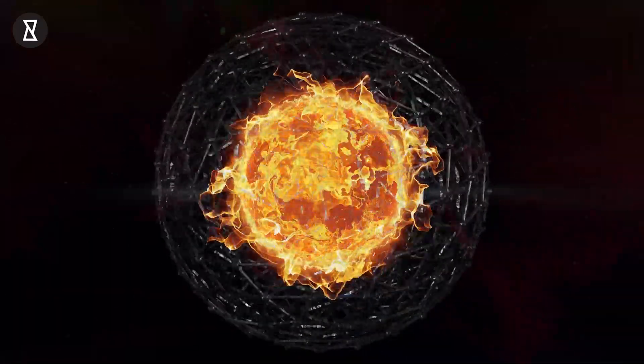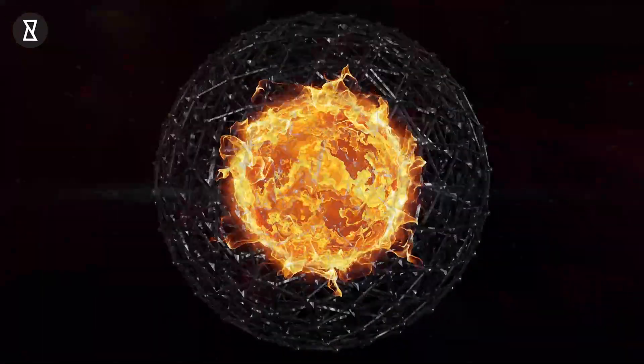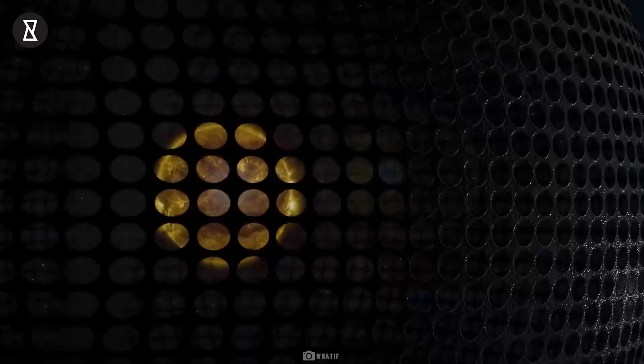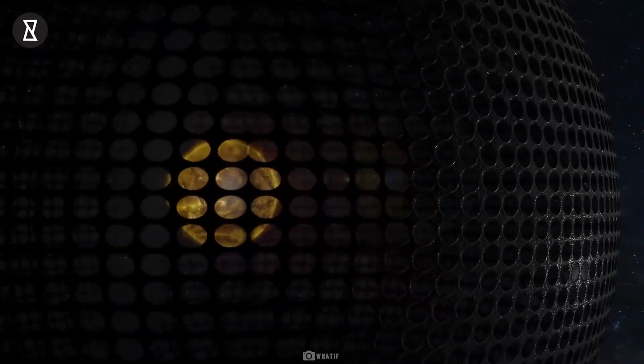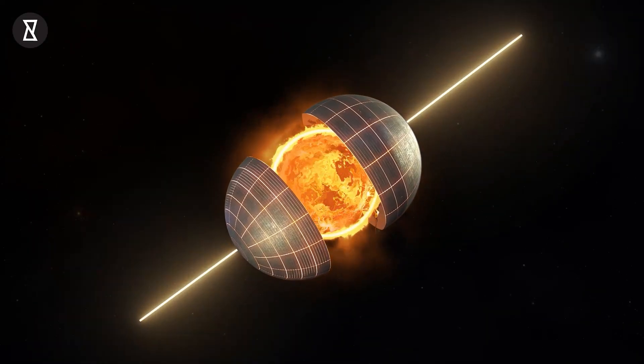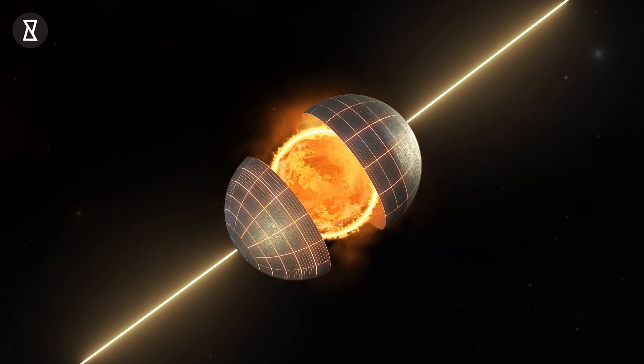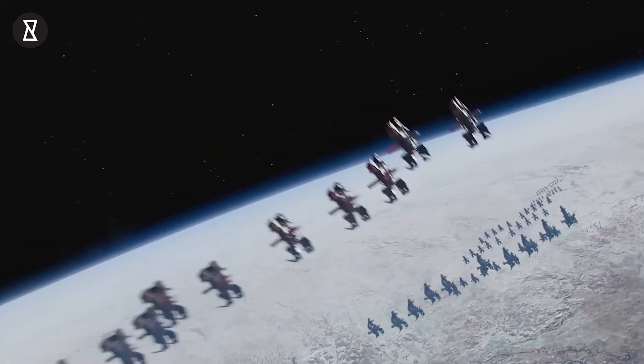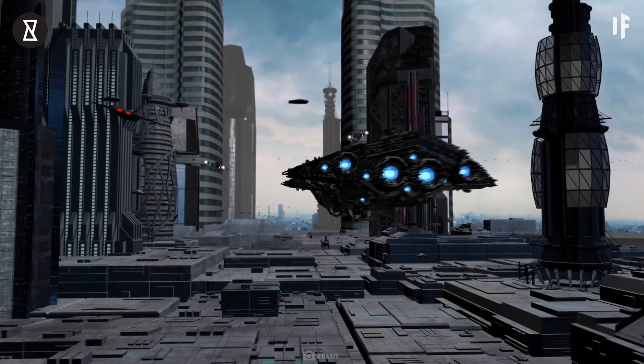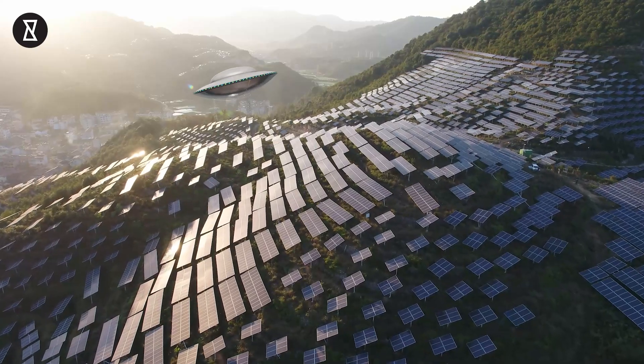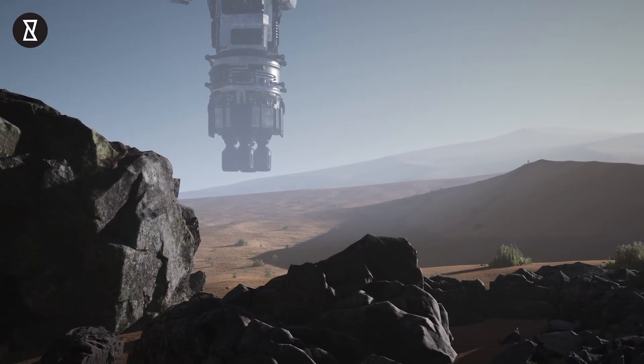A Dyson sphere is a hypothetical megastructure that completely encompasses a star and captures a large percentage of its solar power output. The concept is a thought experiment that attempts to explain how a spacefaring civilization would meet its energy requirements once those requirements exceed what can be generated from the home planet's resources alone.